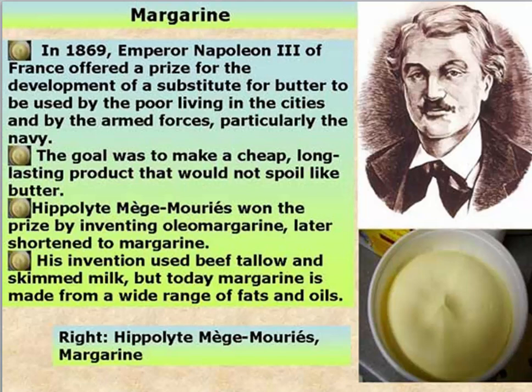We start to see increased production of things like sulfuric acid, laundry soap, dyes, synthetic dyes, and synthetic plastics. And that's where we get to the issue of margarine. Margarine is basically synthetic butter — probably after you read this, you'll never want margarine again. It was a substitute for butter used by the poor and armed forces; they wanted something long-lasting that wouldn't spoil. The original margarine was made from beef tallow and skimmed milk. Now it's just a wide variety of oils.